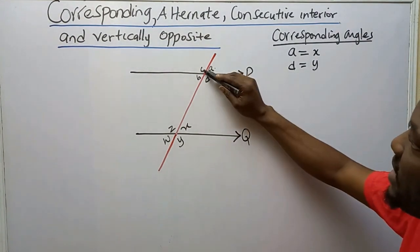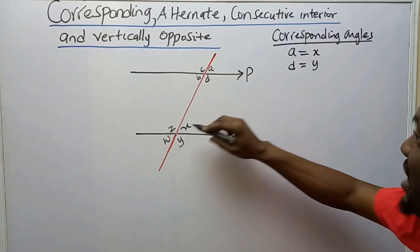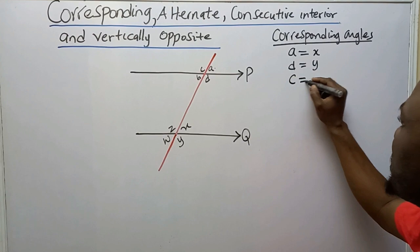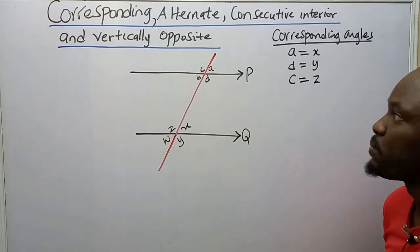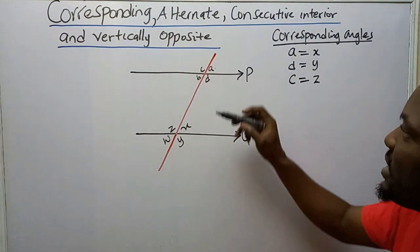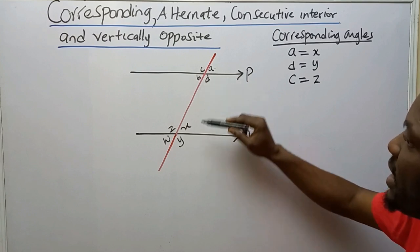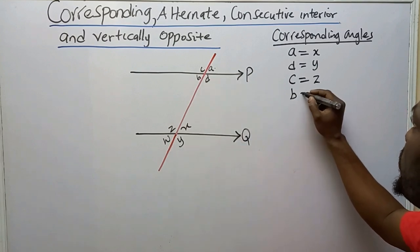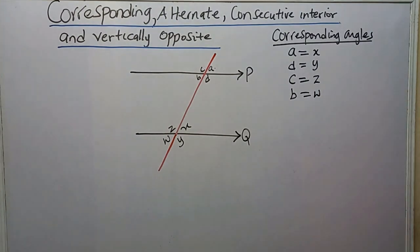Similarly, C is at the top of line P and Z is at the top of line Q, so C equals Z — they are corresponding. And then B is at the bottom of P and W is at the bottom of Q, so B equals W. They are both corresponding angles.